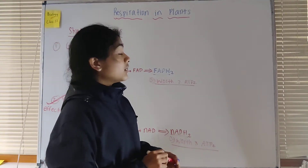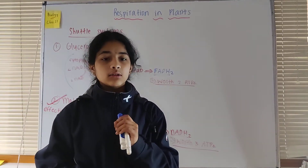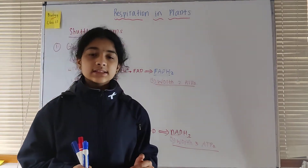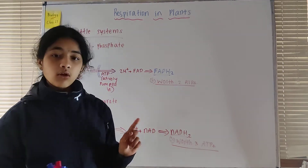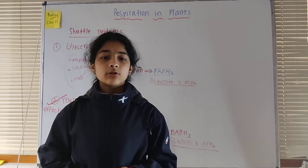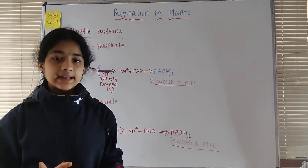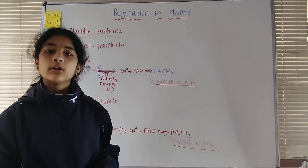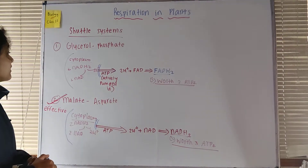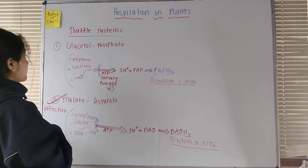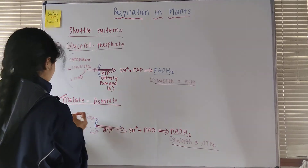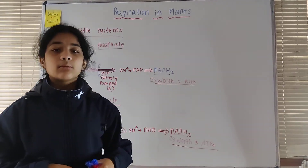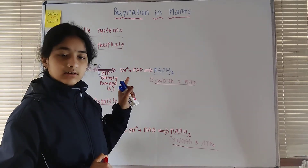In today's video we discussed the energy sheet of respiration, learning how many ATPs are produced in each process: glycolysis produces eight ATPs, oxidative decarboxylation of pyruvic acid produces six ATPs, and the Krebs cycle produces twenty-four ATPs, totaling thirty-eight ATPs. We also learnt about the two shuttle systems — the glycerol phosphate shuttle system and the malate aspartate shuttle system, which is more effective and efficient.